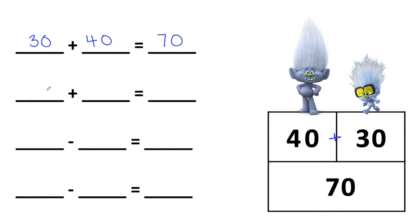So instead of starting with 30, I could start with 40 and add the other part, which is 30. And that will still give me my whole, which is 70. I just switched the order.